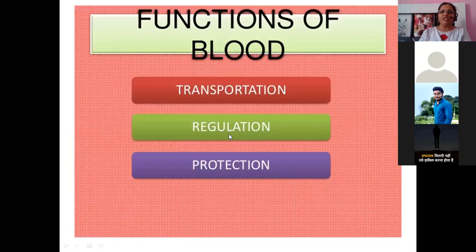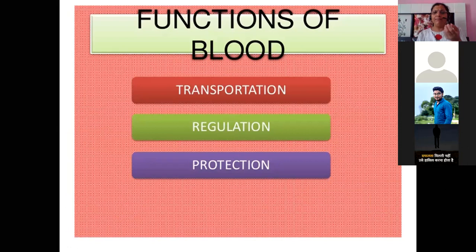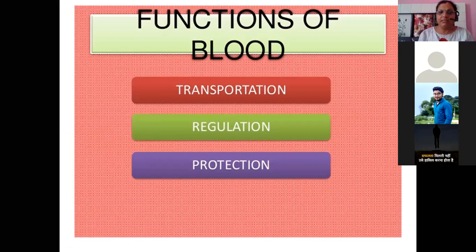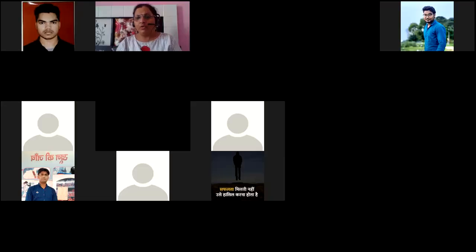The functions of blood are transportation, regulation, and protection. Transportation: blood transports oxygen, carbohydrates, proteins, minerals, vitamins, and all nutrients absorbed through digestion to each and every part of the body. Regulation: blood maintains body temperature. Protection: blood defends the body against disease. I have repeated the entire lesson — do you have any problems? Do you understand? Yes, ma'am. Thank you very much.